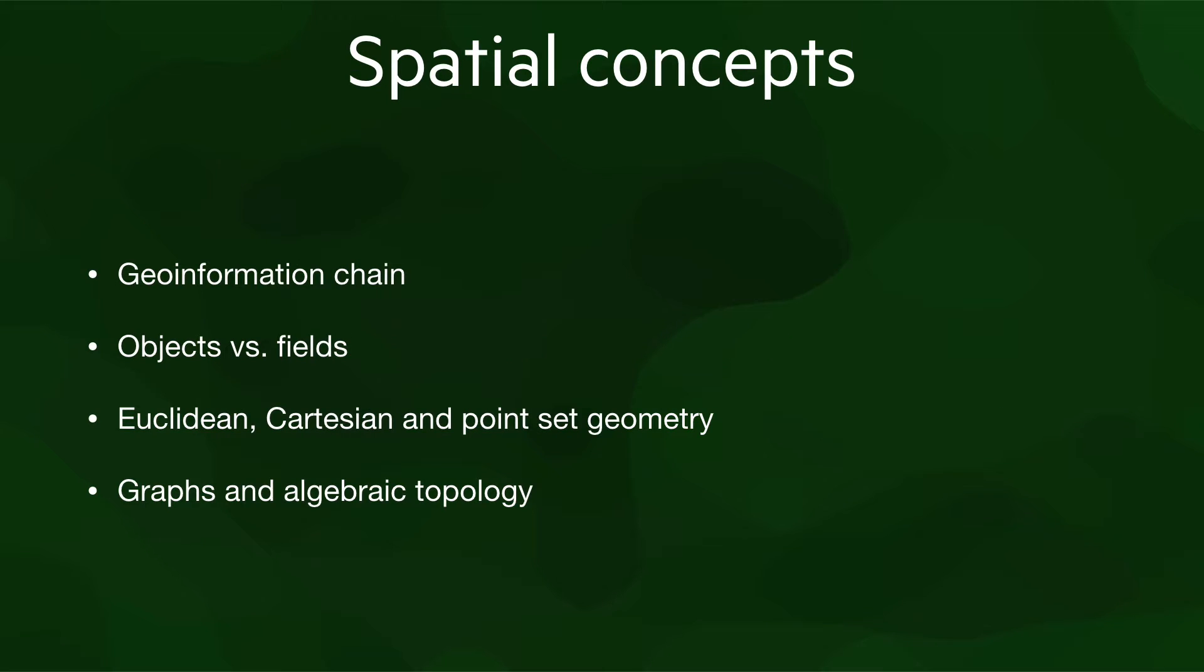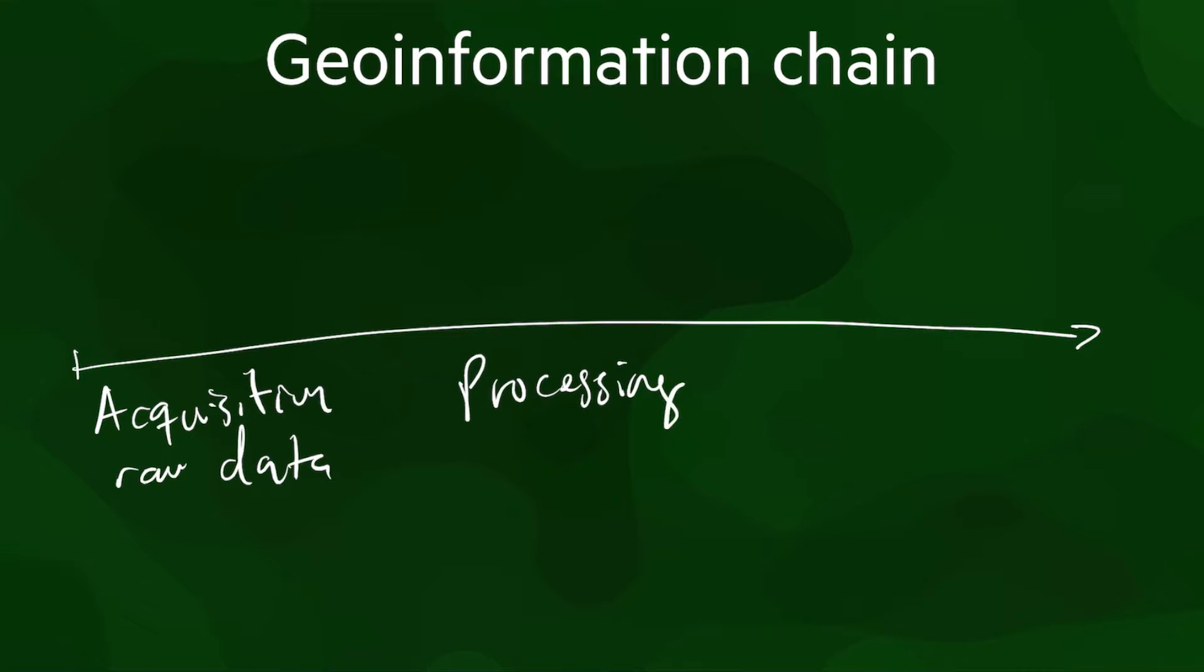This brings us to the second topic of the lesson, which is about some important spatial concepts that are useful for the rest of the course. The first of these concepts is the geoinformation chain, which is just a formal way to refer to the same general process that we just mentioned for the creation of a 3D city model. The idea is that geoinformation is usually created and used in a specific order, starting from the acquisition of raw data, moving through several processing steps, up to the point where we have the data ready for a particular application.